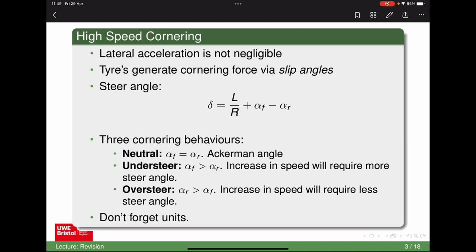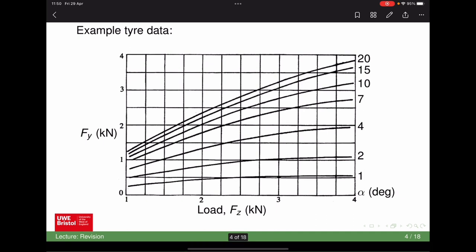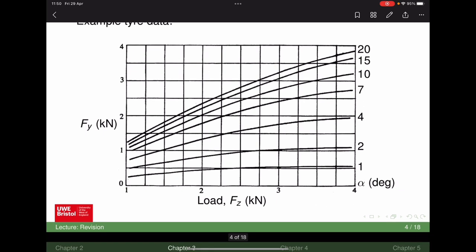Don't forget units — alpha F and alpha R found from a graph will typically be in degrees, whereas L/R entered in metres gives radians. You need to make sure you're comparing the same units when doing the equation. To find alpha F and alpha R, it often involves finding the vertical load and the lateral load, and once you've got those two values, you can determine the slip angle.